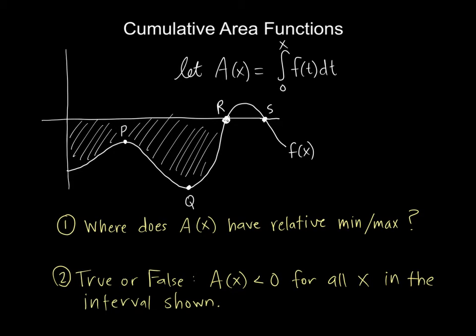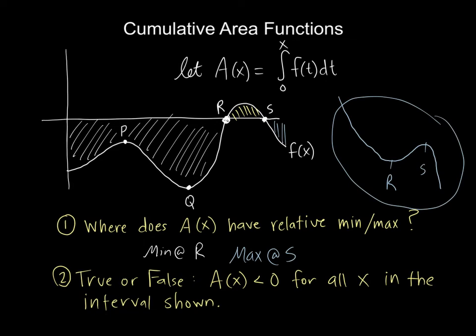So if you decrease until R, and then you start increasing, you've created a min at R. And that is an example of the exact same question if you're looking at f prime and talking about f. Here I'm looking at f and talking about the integral of f, exactly the same question. Where does my max happen? Well, from R to S, I increase for a small amount of time before I start decreasing again after S. So I went decrease, decrease, decrease. I increased for just a moment, and then I'm going to start decreasing again. But my min happened at R, my max happens at S.